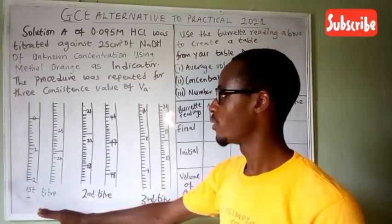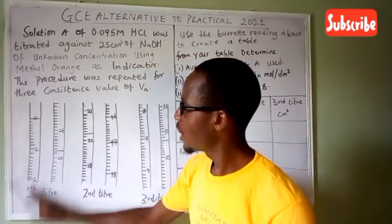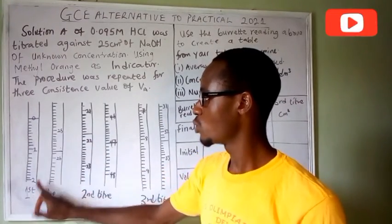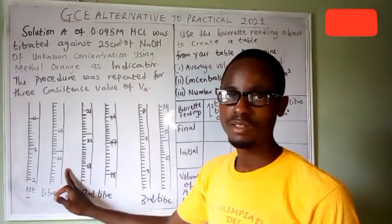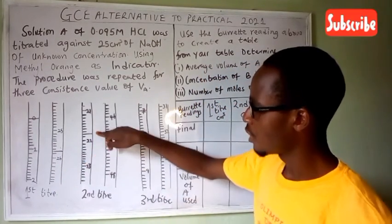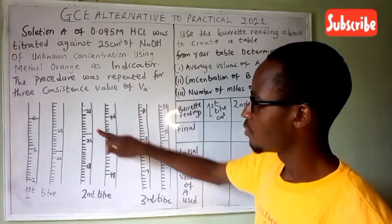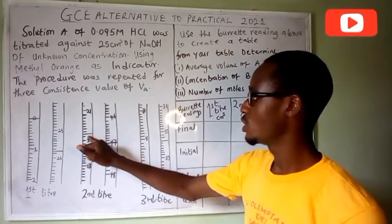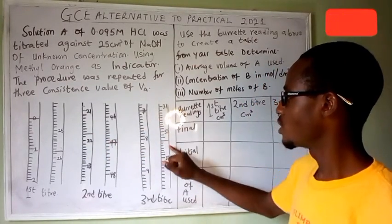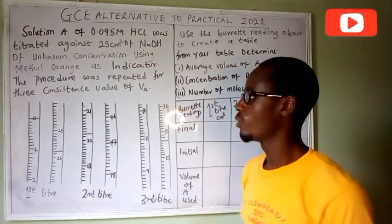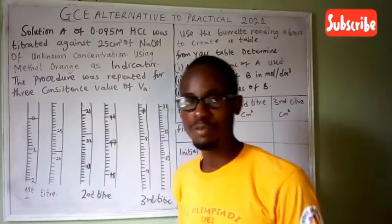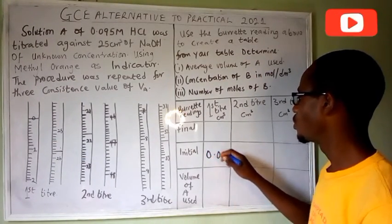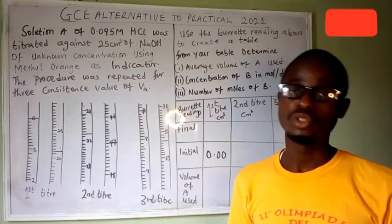Looking at the first titration diagram, the longest line is on zero, so the correct reading here is zero. This is the initial reading and this is the final. We have the initial and the final for the first titration. In my table, the initial reading for the first titration is going to be 0.00 - don't forget the correct reading should be in two decimal places, just like when you perform the experiment.